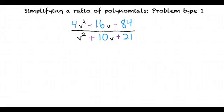We will start by factoring out the numerator, 4v² - 16v - 84. That seems very complicated. How would we even start?